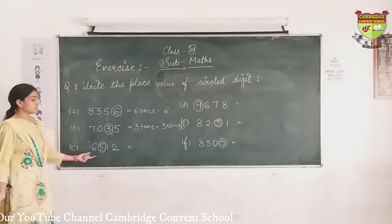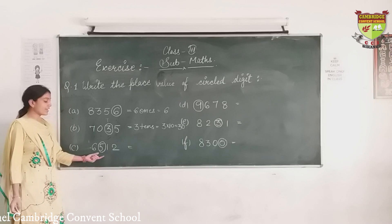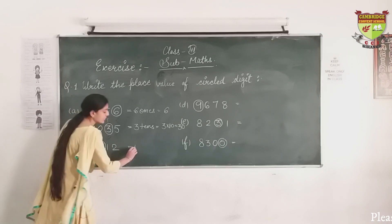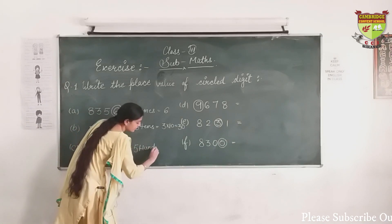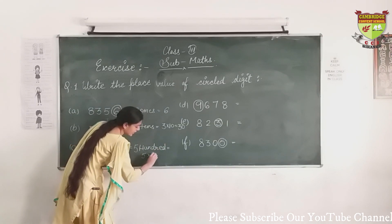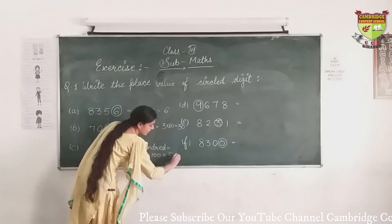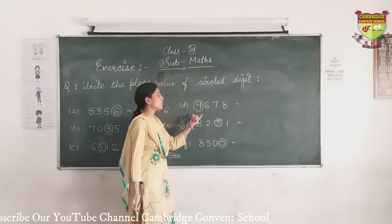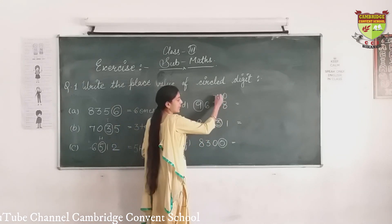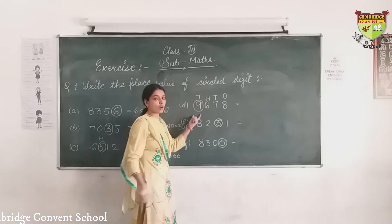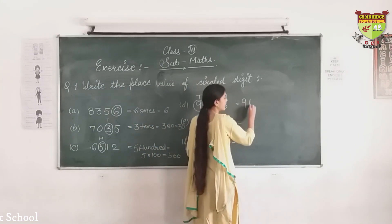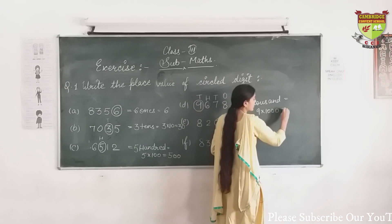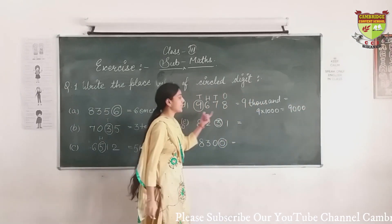Third number is 6,512. The circled digit is 5. Starting from the right: 2 is in 1's, 1 is in 10's, 5 is in 100's. So 5 is in the 100's place, and we write 5 × 100 = 500. The place value of 5 is 500. Next, number D is 9,678. Starting from the right: 8 is in 1's, 7 is in 10's, 6 is in 100's, and 9 is in 1000's. Since 9 is in the 1000's place, we write 9 × 1000 = 9,000. The place value of 9 is 9,000.